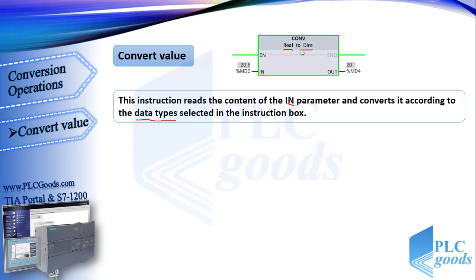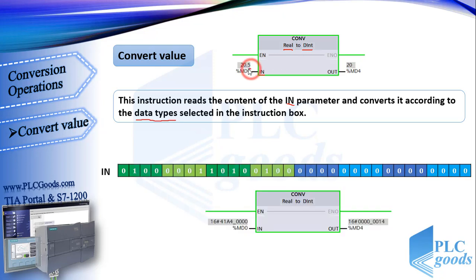For example, this program converts a Real format number to a Double Integer. As you know, both of these data types use 32 bits to store numbers. To have a better view, I change the display format to hexadecimal — so this is the hexadecimal representation of the above program.